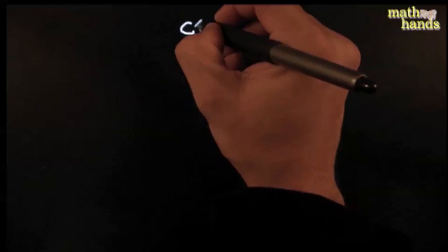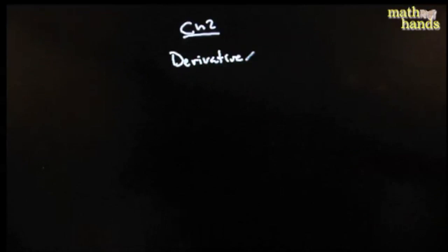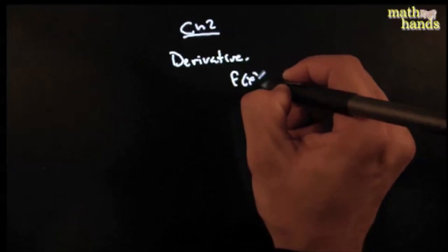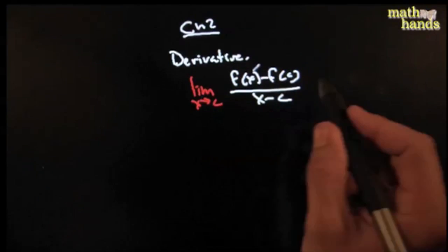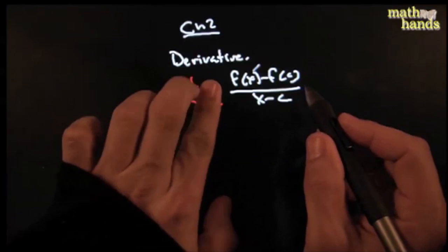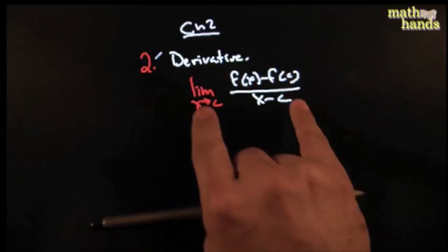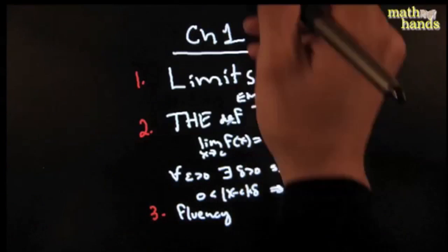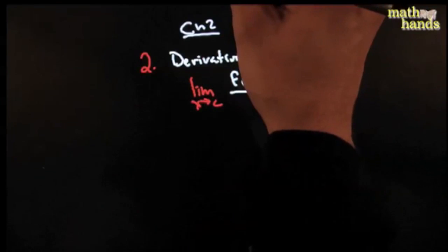That takes us to Chapter 2, whose highlight had to be the derivative — the slope of the tangent line function. This incredibly famous definition started off with just a secant slope, and with one magical ingredient — taking x really close to c — it turns the secant slope into a tangent slope. That has to be one of the most important highlights of Chapter 2, if not of the whole course.